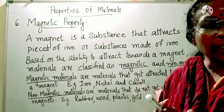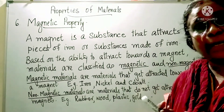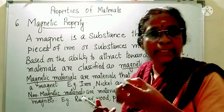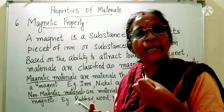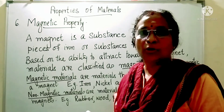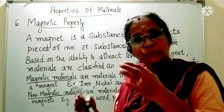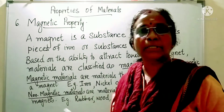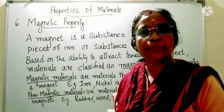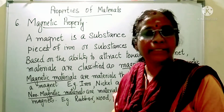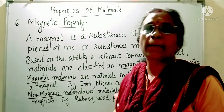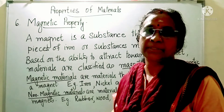To summarize: a magnet is a special substance which attracts iron or things made up of iron. The things around us can be divided into 2 groups: magnetic substances and non-magnetic substances.